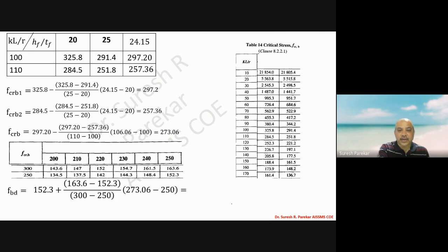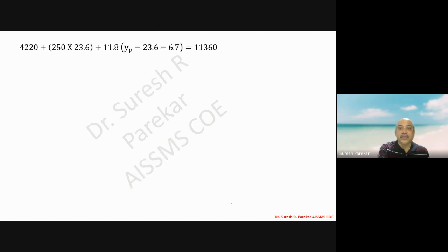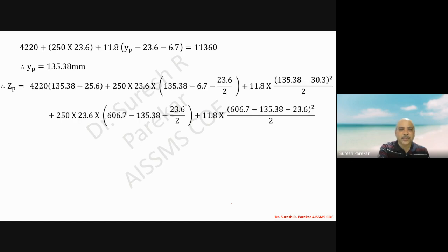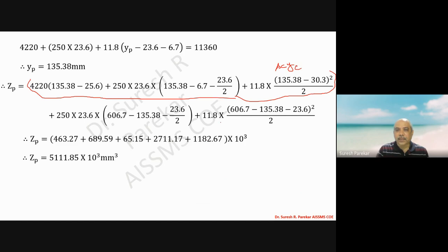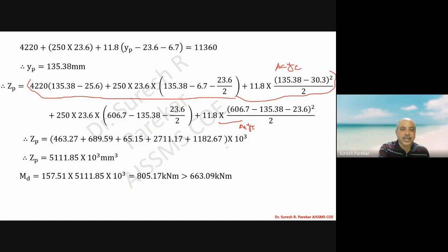Using the same procedure, yp is calculated as 135.38 mm. Zp is calculated as 5111.85 into 10 cubed mm cubed. The design moment Md about Z-Z axis equals 805.17 kilonewton meter, which is greater than the applied moment of 663.09 kilonewton meter. So this condition is satisfied.